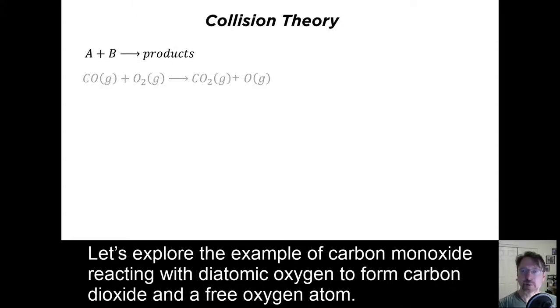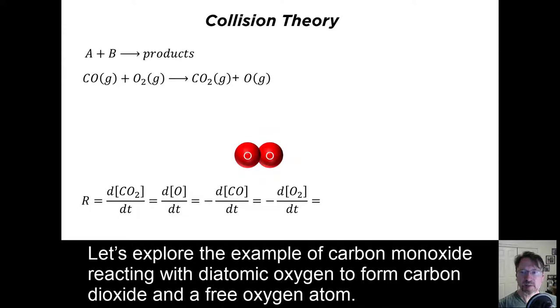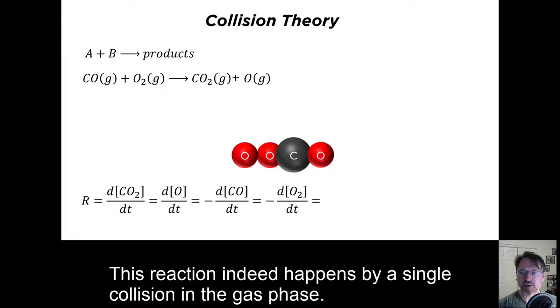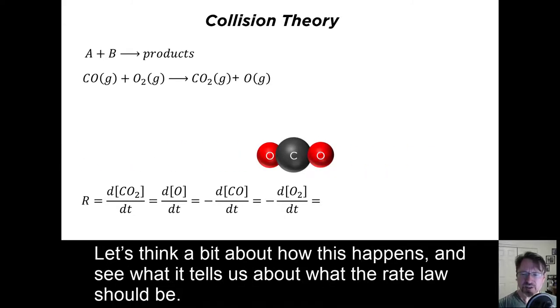Let's explore the example of carbon monoxide reacting with diatomic oxygen to form carbon dioxide and free oxygen. This reaction indeed happens by a single collision in the gas phase. Let's think a bit about how this happens and see what it tells us about what the rate law should be.